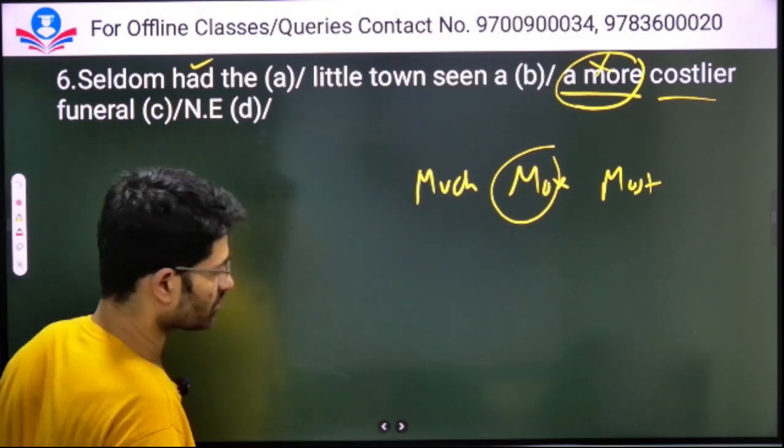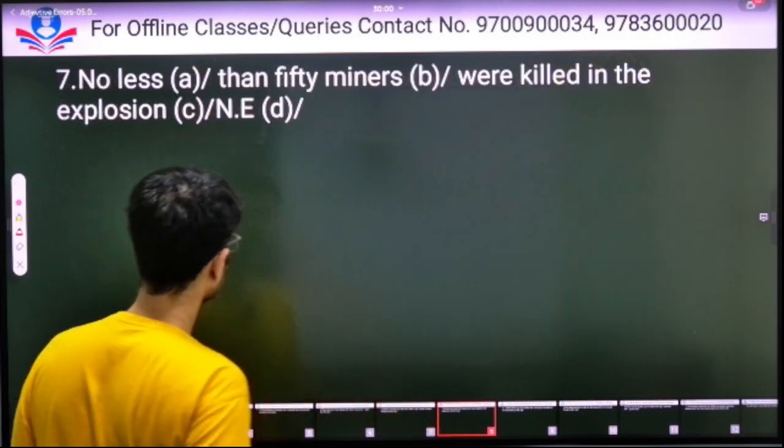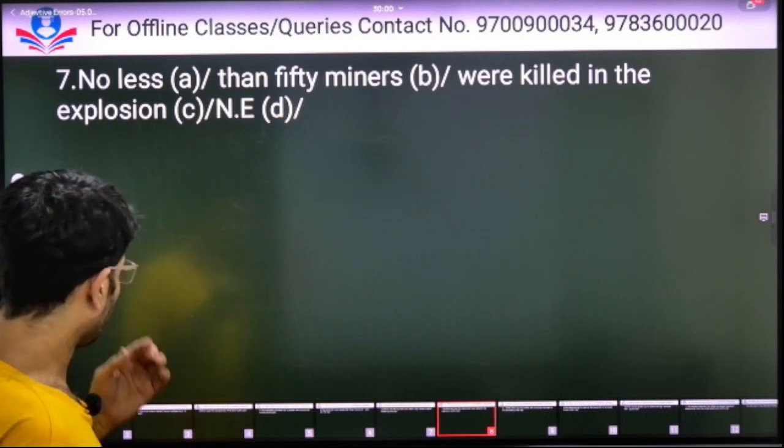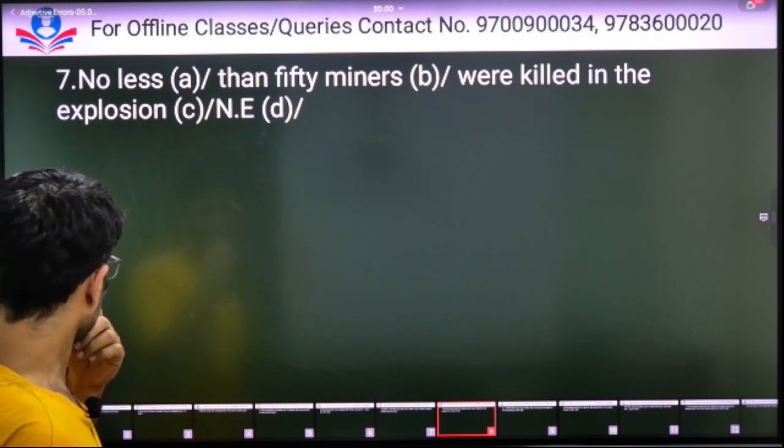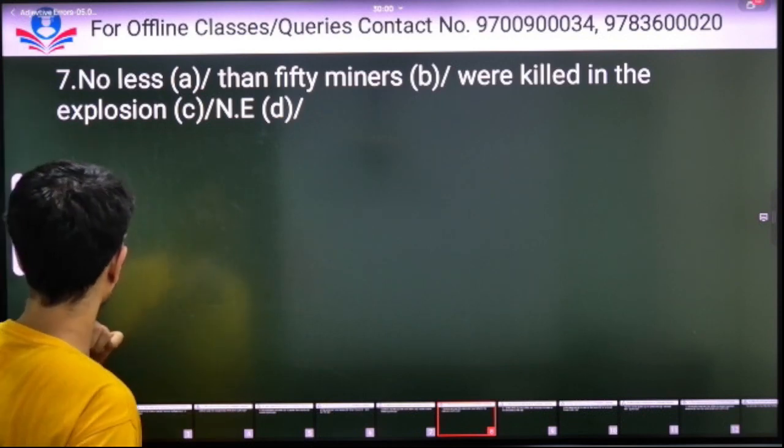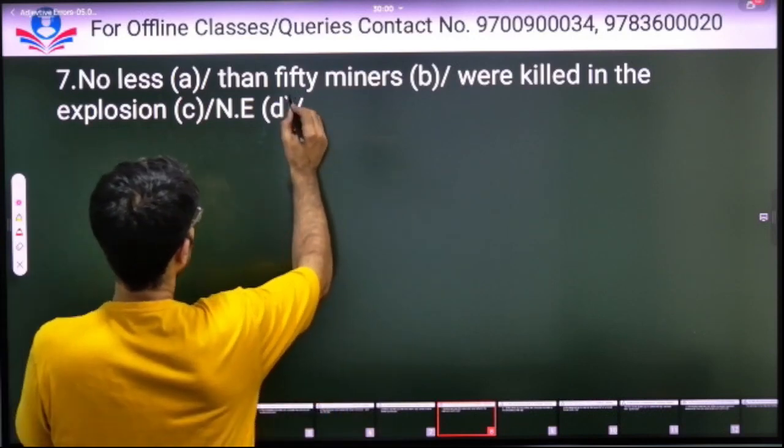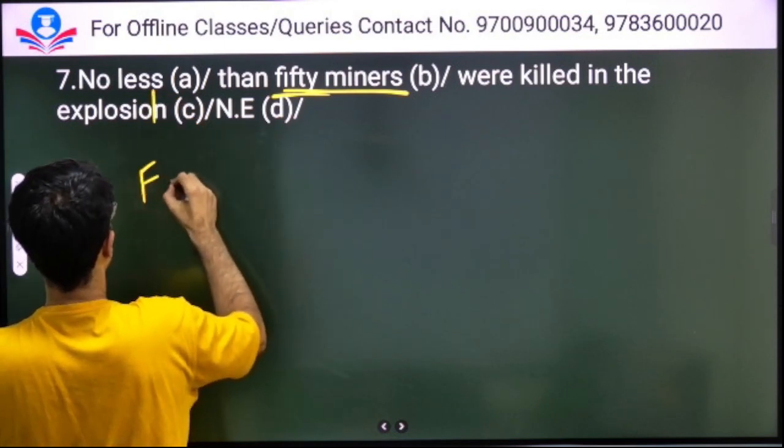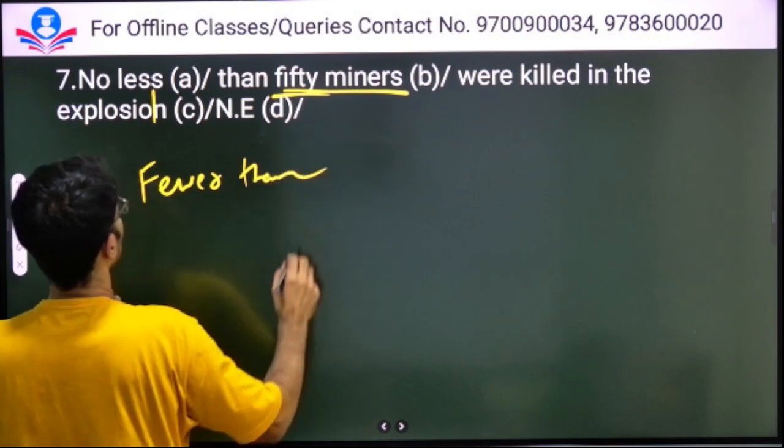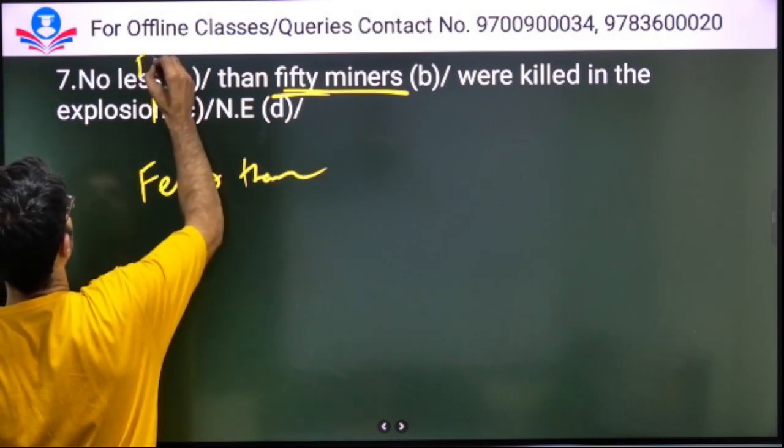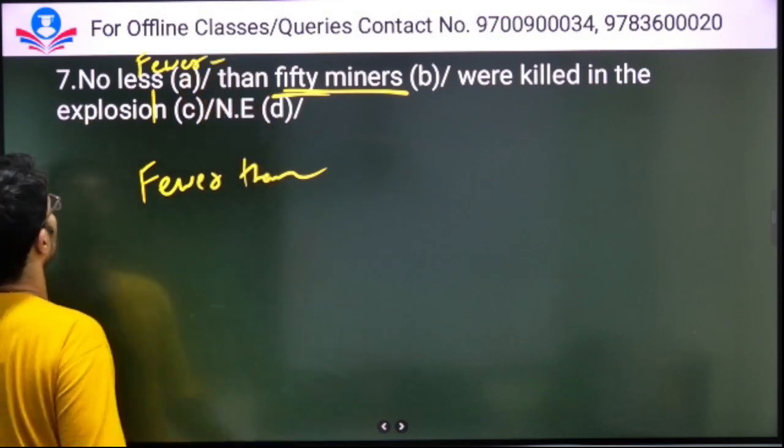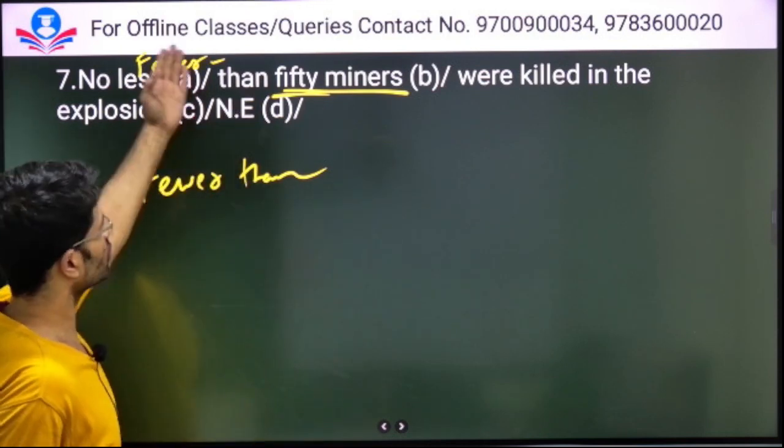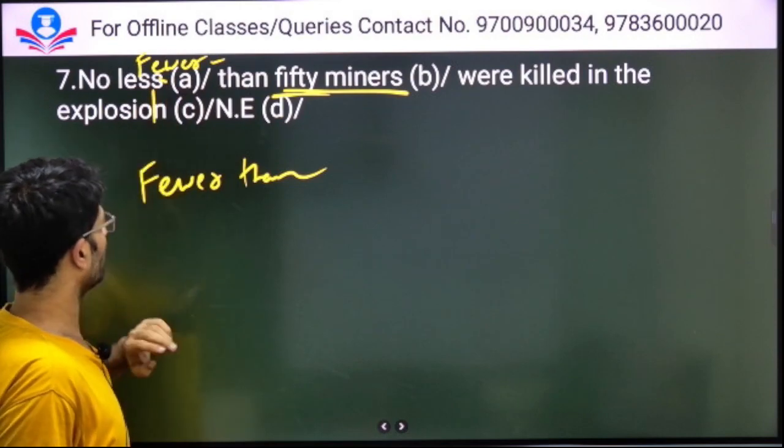No less than 50 miners were killed in the explosion. 'Less' is for uncountable, but 'miners' is countable - we can count 50 miners. So it should be 'no fewer than 50 miners'. We use 'fewer' with countable nouns.